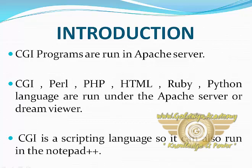CGI programs are run in the Apache server. CGI, Perl, PHP, HTML, Ruby, and Python languages are run under the Apache server. Dreamweaver is one of the software options similar to Apache server. CGI is a scripting language, so it can also run in Notepad++. Notepad++ is like a notepad where we write CGI code.